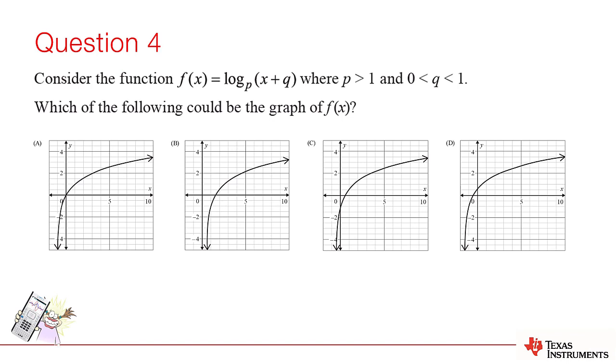Question 4. A good understanding of transformations of functions and logarithms would help us jump straight to the answer without pressing a button. But, let's play a little game of spot the difference. We see that the main difference between the graphs is the location of the vertical asymptote and the axis intercepts.